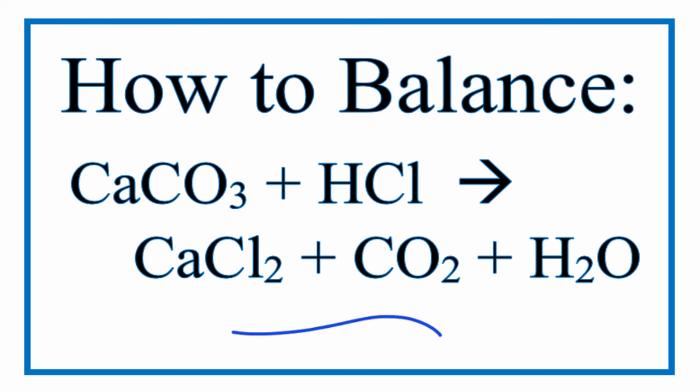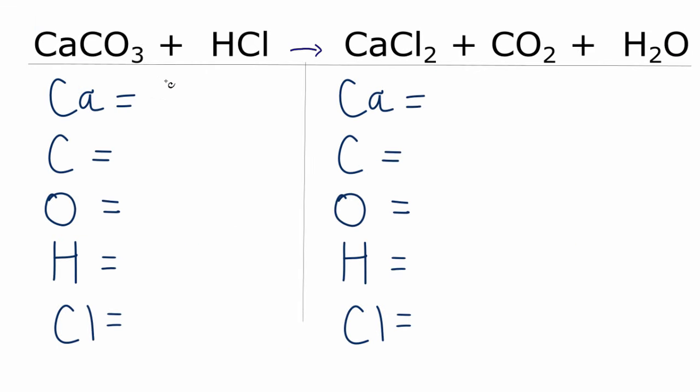Let's add up the atoms on each side of the equation. We have one calcium, we have one carbon, we have three oxygen, only one hydrogen, and then one chlorine. Over on the products, we have the one calcium, the one carbon,